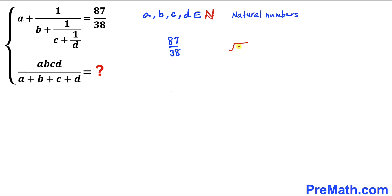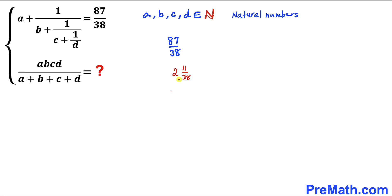Let's perform the division: 87 divided by 38. This goes twice, giving us 76, and our remainder is 11. So this fraction can be written as the mixed number 2 and 11 over 38, which is also written as 2 plus 11 divided by 38.